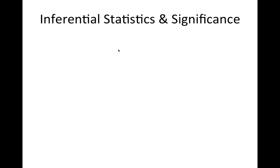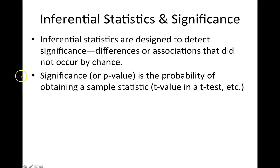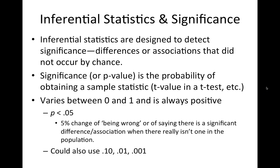When we talk about inferential statistics, we're looking at the role of statistical significance. Inferential statistics are designed to detect significant differences or associations that did not occur by chance. Significance — a p-value — is essentially the probability of obtaining a particular sample statistic. That p-value varies between 0 and 1 and is always a positive value. In social sciences — psychology, sociology, and related fields — we use a standard of p less than 0.05.